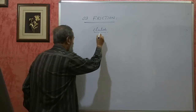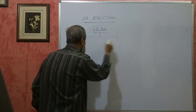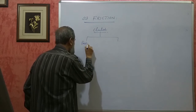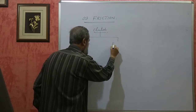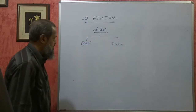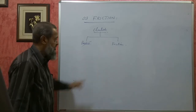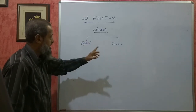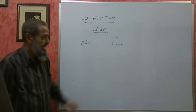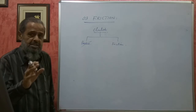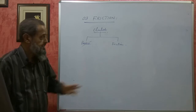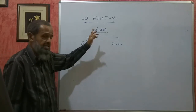These clutches are broadly classified into two types: one is called the positive clutch and the other one is called the friction clutch. We only deal with friction clutches here. They are called friction clutches because the power is transmitted from the driver to the driven shaft due to friction at the contact surface.